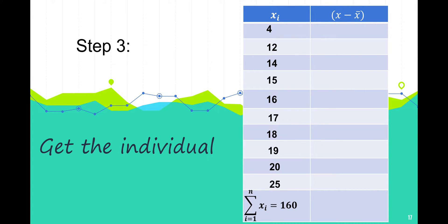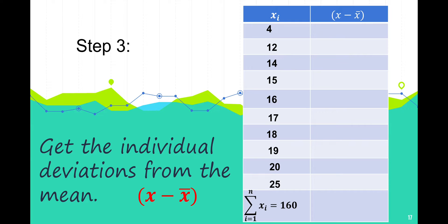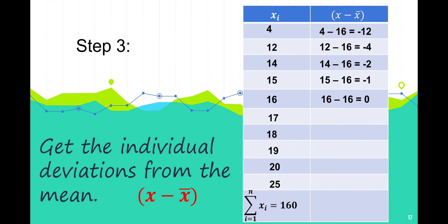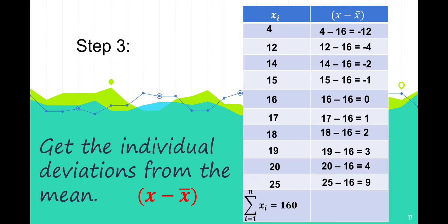For the third step, get the individual deviations from the mean, that is x minus x-bar. We subtract the mean from each sample: 4 minus 16 equals negative 12, 12 minus 16 equals negative 4. After computing all values, we have the difference of each sample and the sample mean.